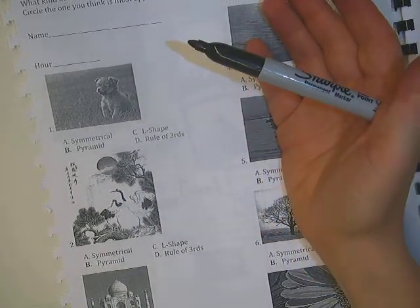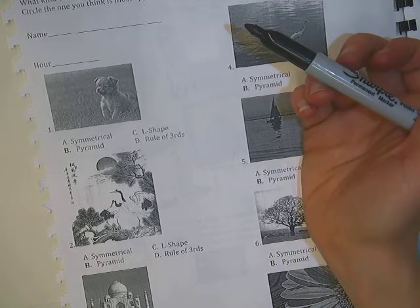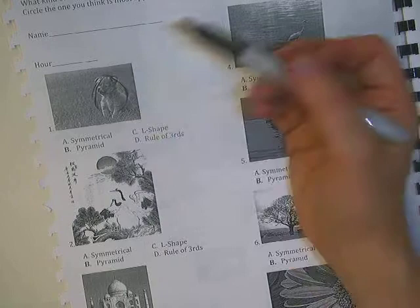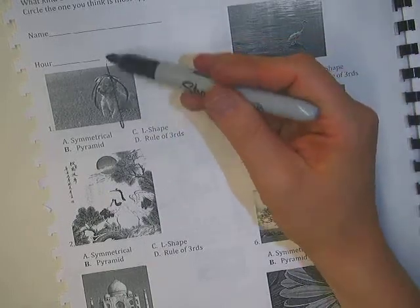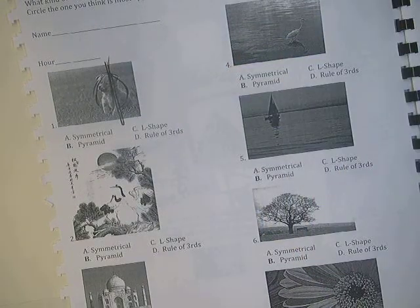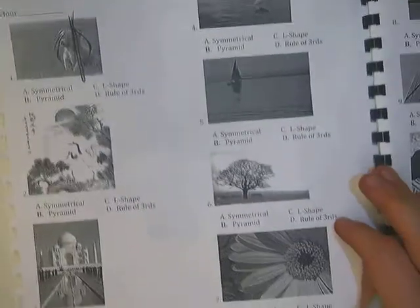And so some of these, like here we got the puppy. If you don't know what it is, a good way to think about it is what is your focal point and where is that focal point located? So the puppy dog is sitting right here and it's sitting at that one third mark. So that would be a rule of thirds.